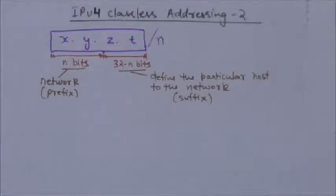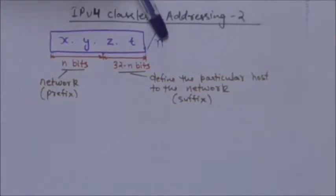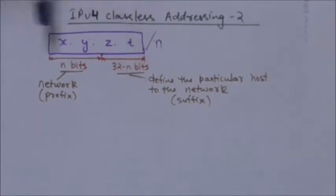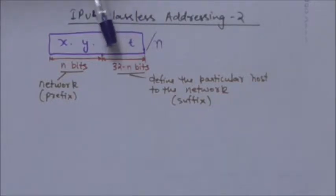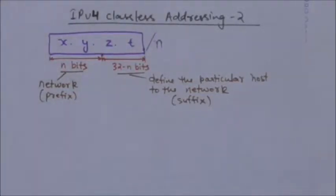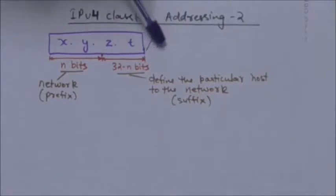Welcome back. This is the second tutorial for IPv4 classless addressing. When an IP address has no subnetting, it defines only two levels of hierarchy. Consider address x.y.z.t with a slash n notation. Here, n is the mask. The n leftmost bits define the network — this part is called the prefix. The 32 minus n rightmost bits define the particular host — this part is called the suffix.